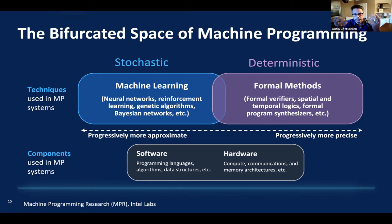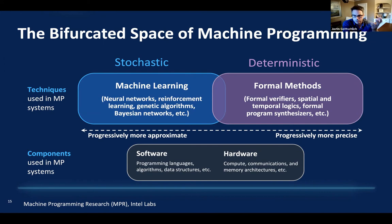A lot of people think when I talk about machine programming I mean ML for code — I absolutely do not mean that. That is one way you can do this: GitHub Copilot, Tab9, auto-completion. Those are using machine-learned probabilistic systems like ControlFlag. But it doesn't have to be just stochastic in nature. It can also use formal methods, which depending on the type used may provide a certain level of determinism not possible with stochastic systems.